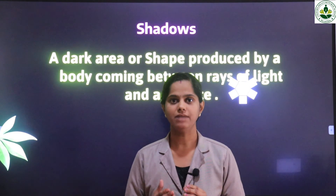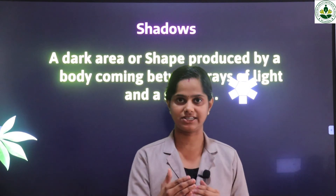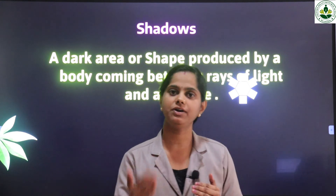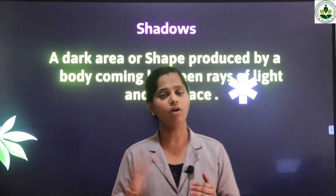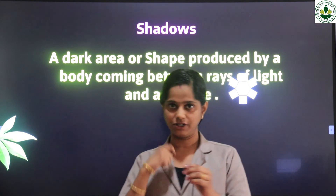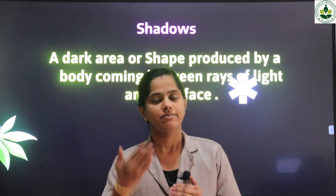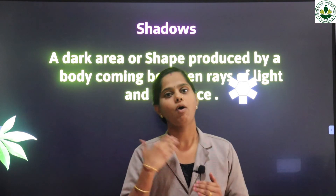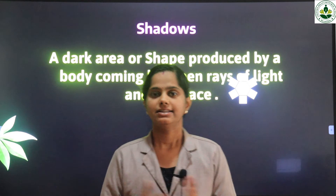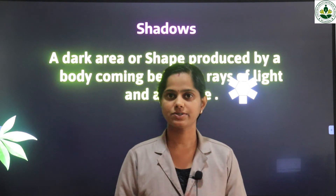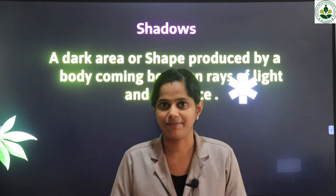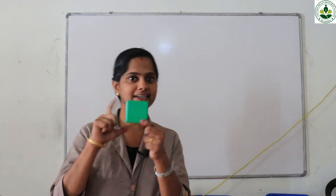For this activity, first we place a solid shape in front of a screen. Then bring a torch in front of the solid from the side opposite to the screen. Then we can see the shadows of some solid shapes.